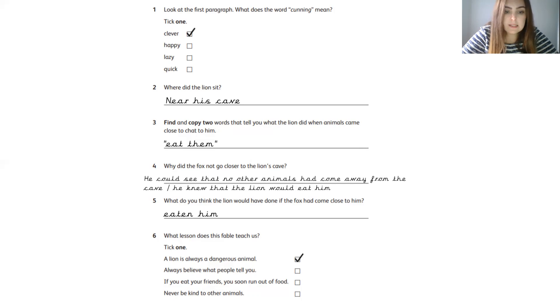Number six. What lesson does this fable teach us? Tick one. Look at that word in bold. You just need to tick one of the options below. And give yourself a mark if you ticked a lion is always a dangerous animal.